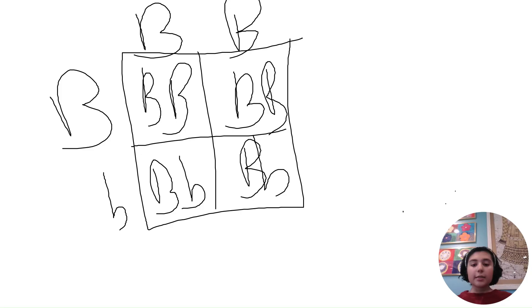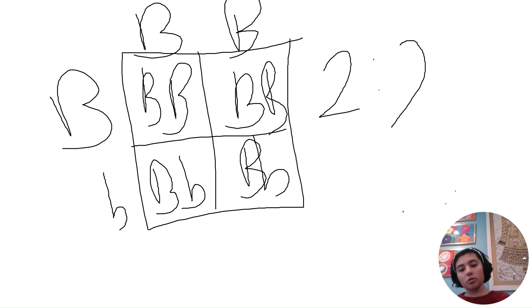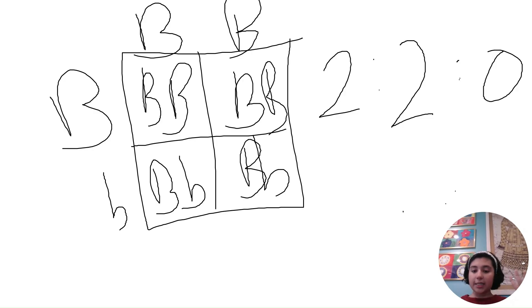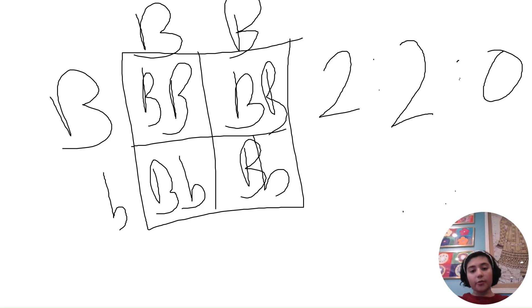Looking at the genotype ratio, you can see two homozygous dominant traits, so you write 2. Then there are two heterozygous dominant, so you write 2. And there are zero homozygous recessive, so you write 0 — giving a ratio of 2:2:0. For the phenotype, which is what trait is expressed physically, there is only one option: brown fur. Because even though the recessive trait is carried, the dominant trait masks it, so the phenotype ratio is 4:0.